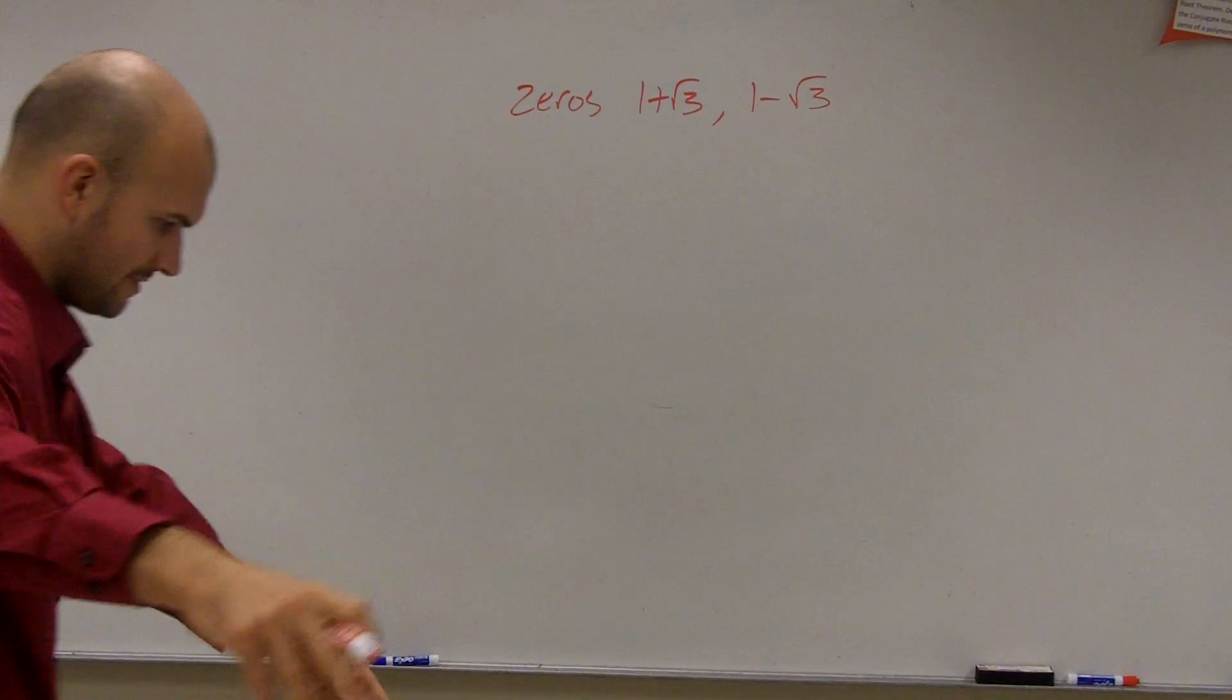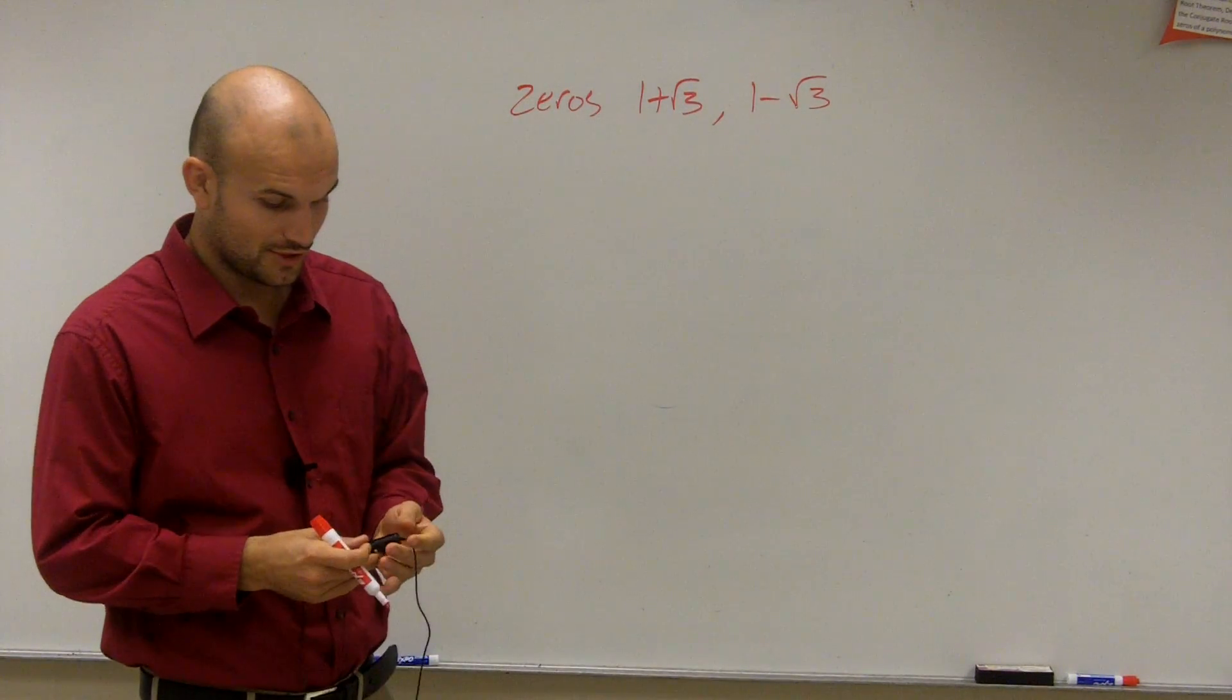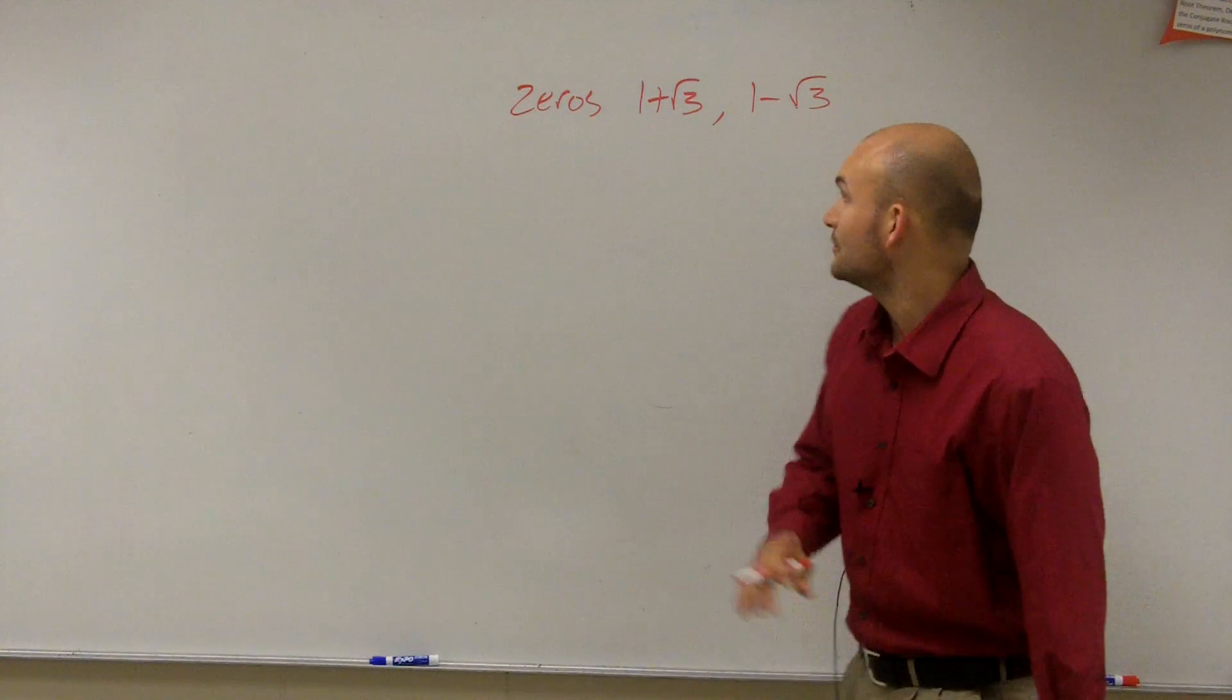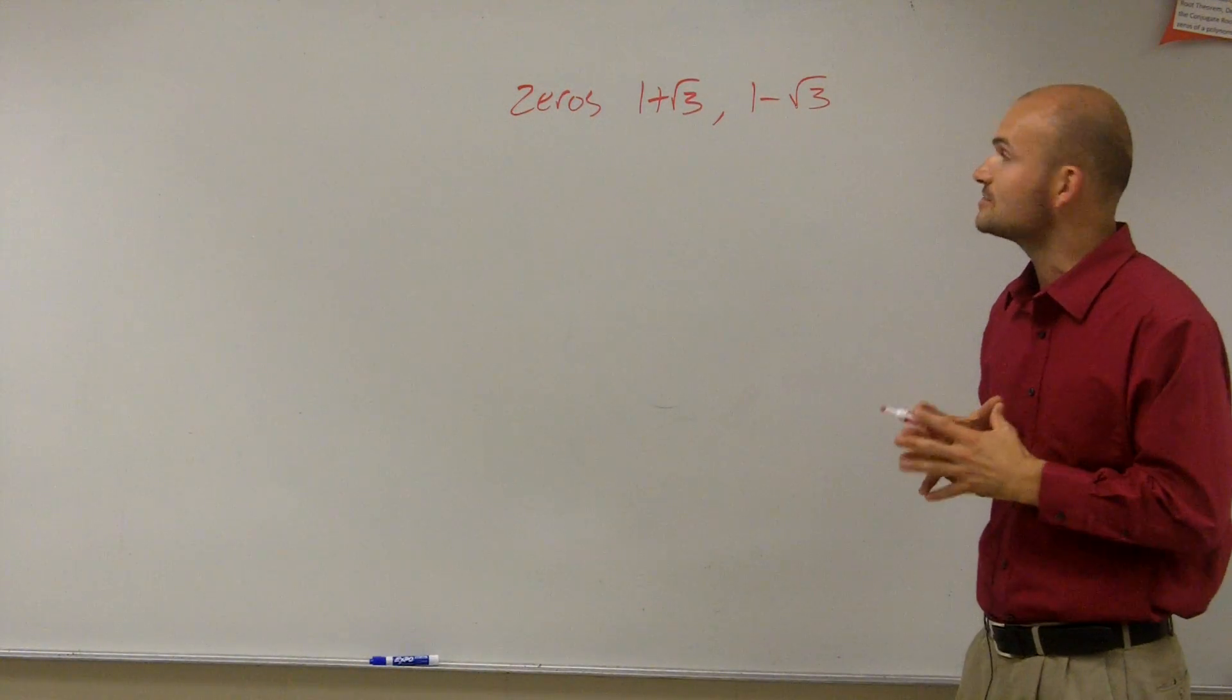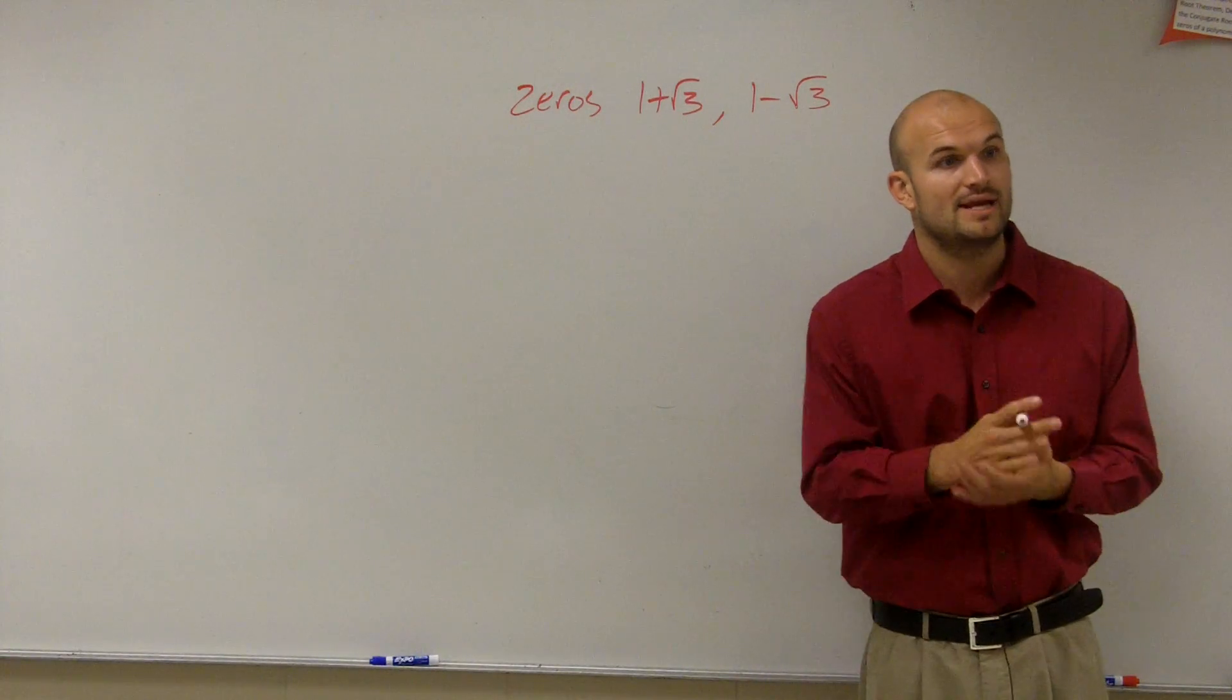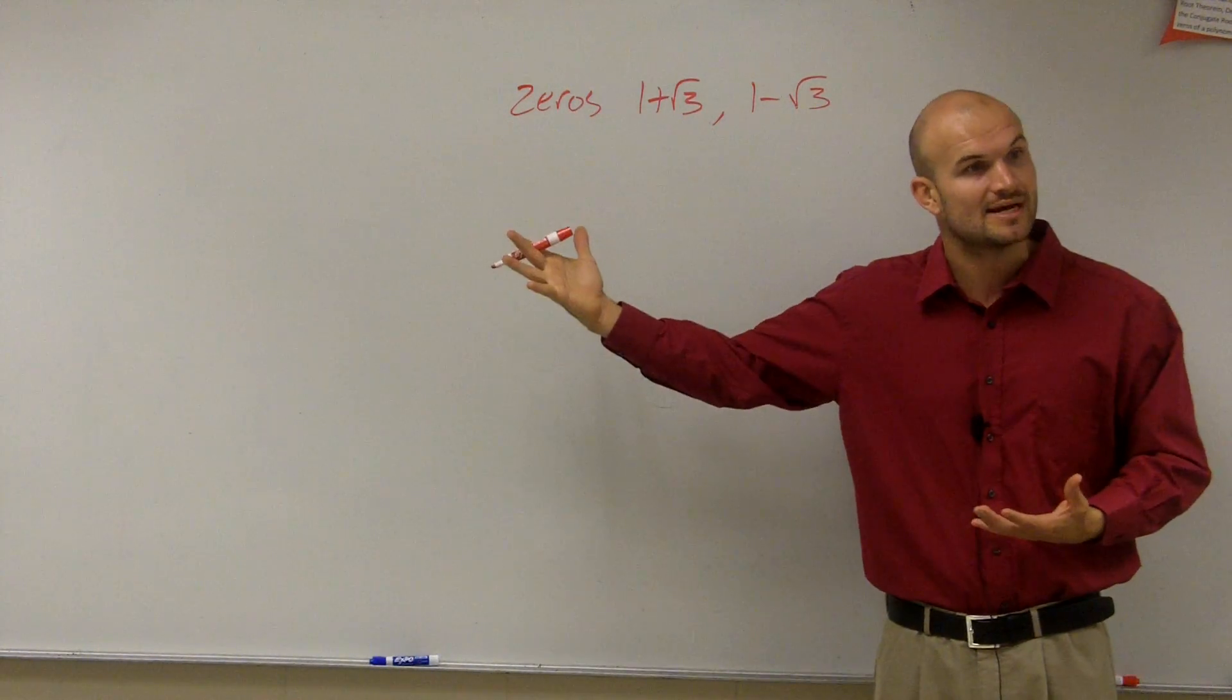All right, so now we got that good. Make sure actually we're good. We're on lights, camera, action. So what we want to do here, ladies and gentlemen, is we have our zeros 1 plus square root of 3 and 1 minus square root of 3. Just like you had for your homework quiz, the main important thing you need to understand is these are your zeros, your x-intercepts.